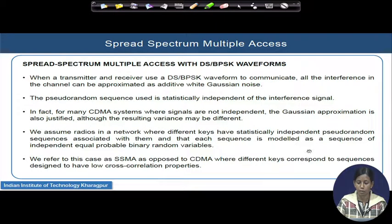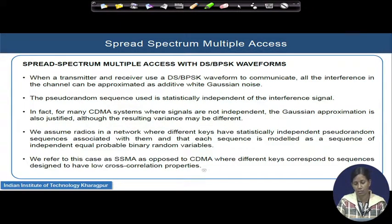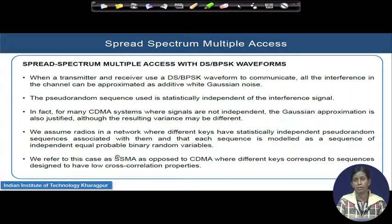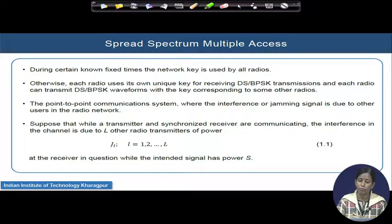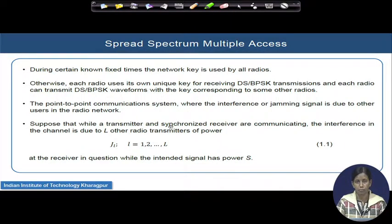These sequences are modeled as a sequence of independent equiprobable binary random variables with low autocorrelation values, making it a CDMA system. For this analysis, we will consider that the condition follows the SSMA assumption — i.e., keys are perfectly orthogonal to each other — for ease of analysis. For known fixed times, the network key is issued by all radios; otherwise, each radio uses its own unique key for receiving DS-BPSK transmission. They can transmit either using the same key or by different keys provided by the network.